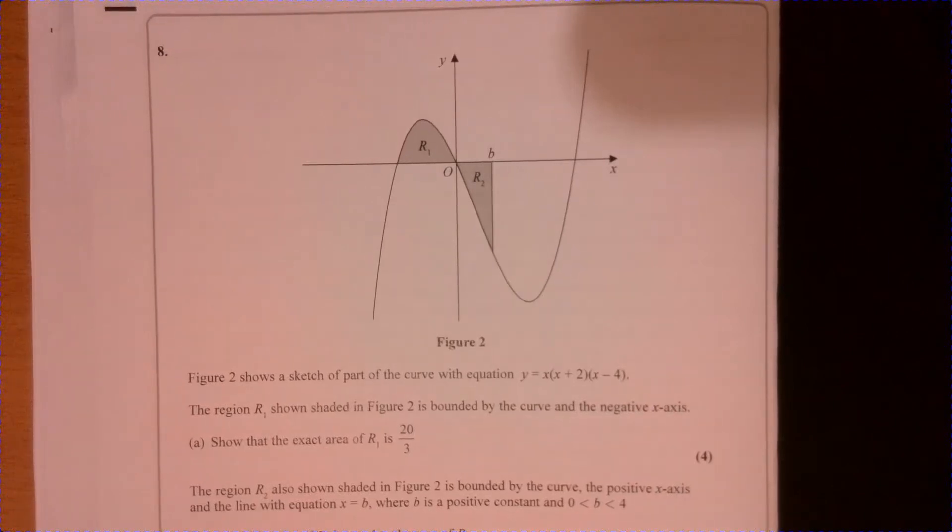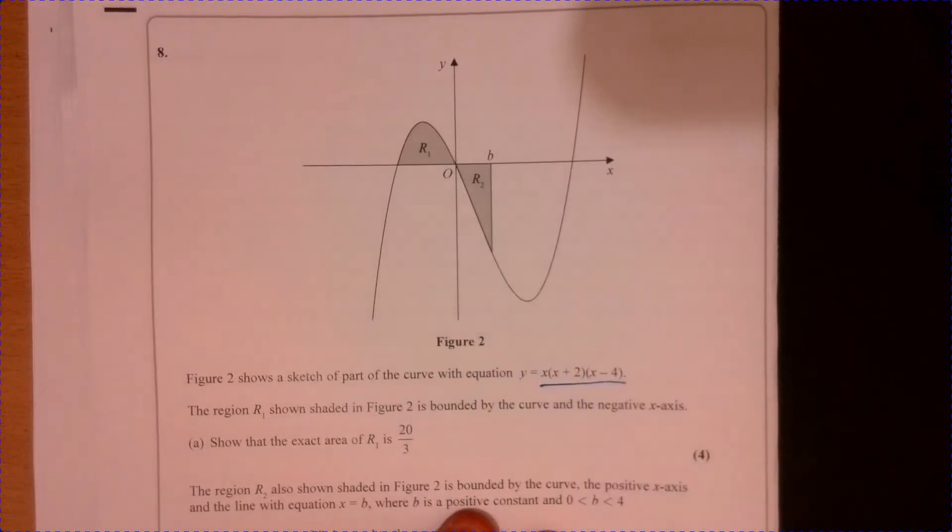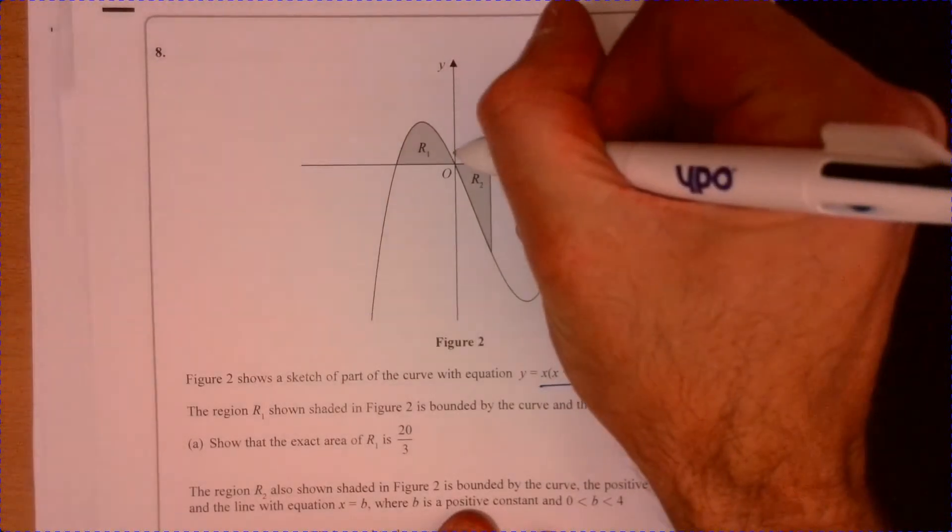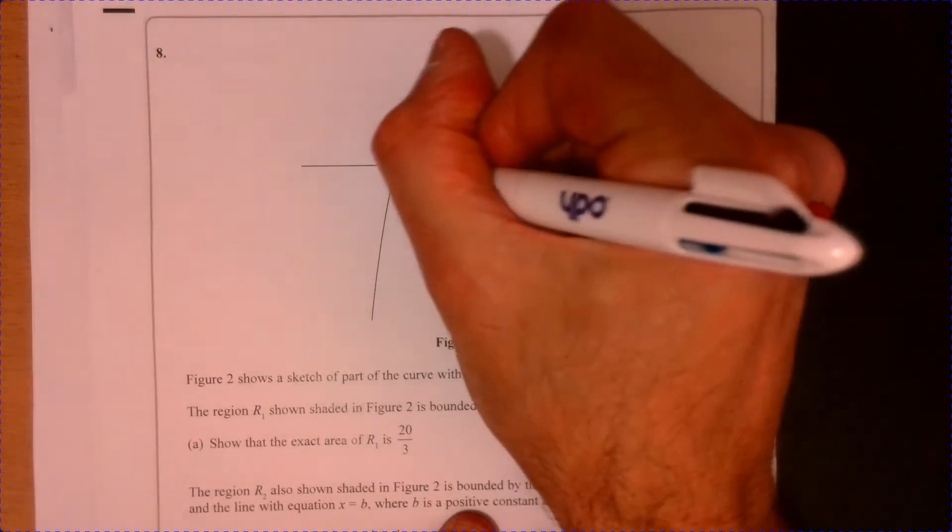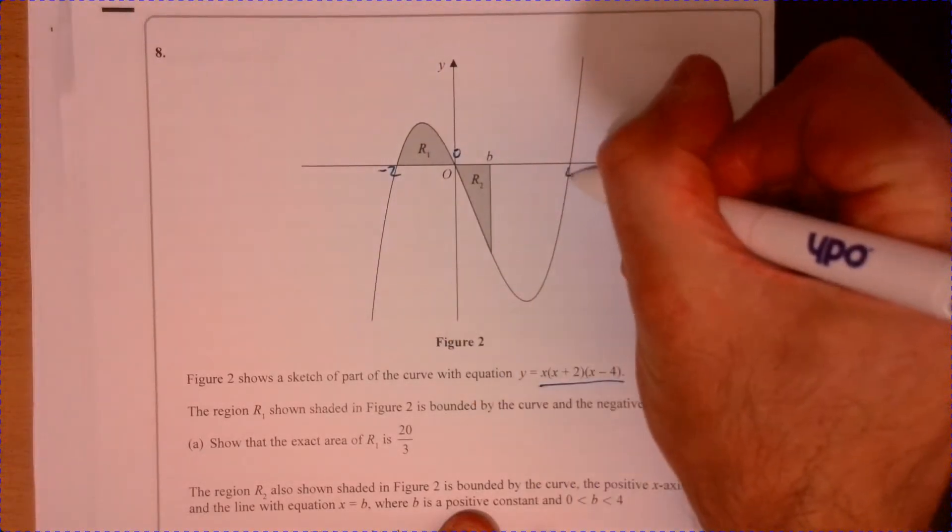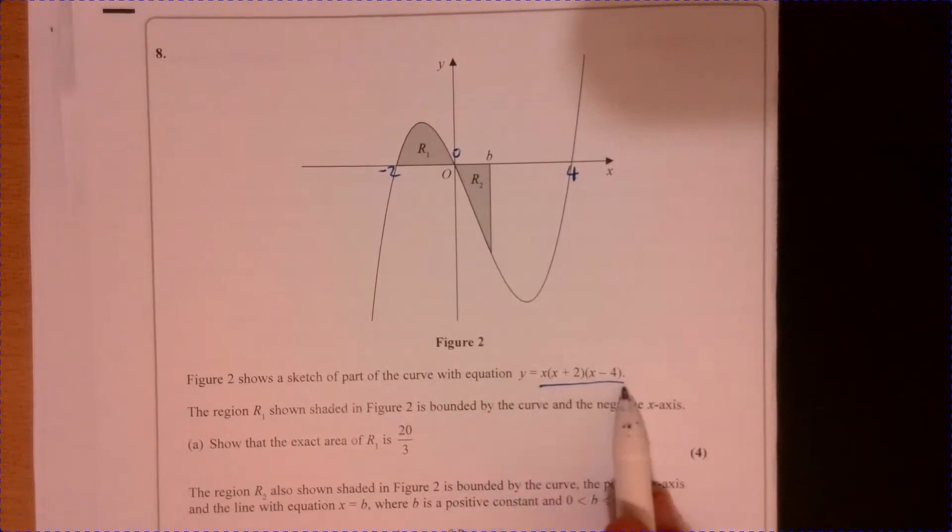Question eight. The first thing we want to do is say what the roots are. That point there is zero, and we also know it goes through minus two and it's going to go through there at four. That's what that tells us.